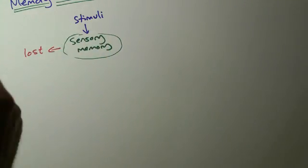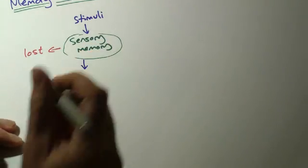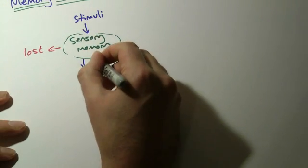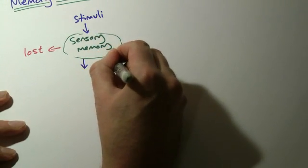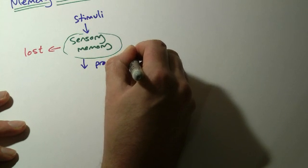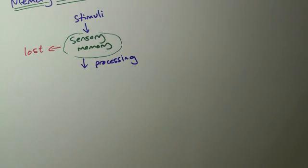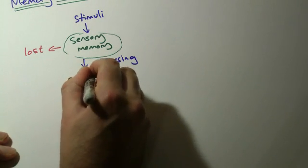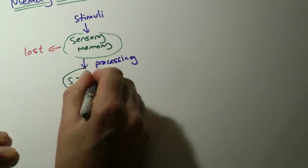If the brain is making this internal decision that this might be something I need to remember, we then go through a step called processing, and then it goes into our short term memory. I'm just going to put STM, but that's short term memory.